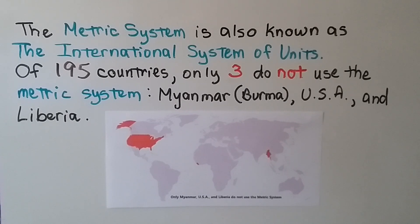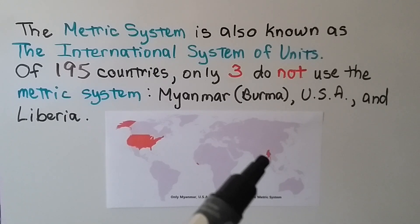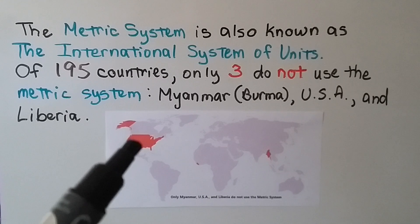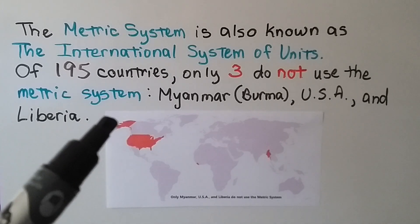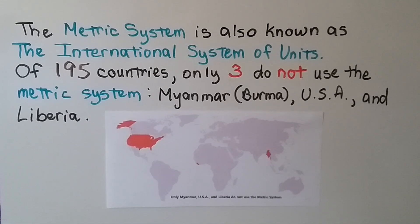The metric system is also known as the international system of units. Of 195 countries, only three do not use the metric system: Myanmar, also known as Burma; the USA; and Liberia. Myanmar is talking about officially taking on the metric system, which would leave only two countries in the whole world that don't use it. Here's Myanmar, here's Liberia, and then the United States — the mainland with Alaska and Hawaii.